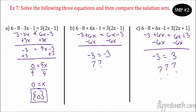So the first one: I distribute, combine, and get negative 3 minus 3x equals 6x minus 3. I added 3x to both sides and got 9x, then added 3 and got x equals 0. So the solution is 0. A lot of people think x equals 0 doesn't count, but it is an element in the solution set — it is absolutely important. There's a huge difference between x equals 0 and the empty set where there are no answers.